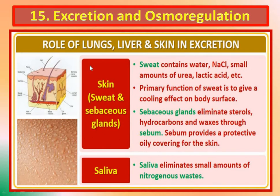The next organ is skin. Skin plays an important role in excretion. Skin has sweat glands and sebaceous glands — these are two types of glands.